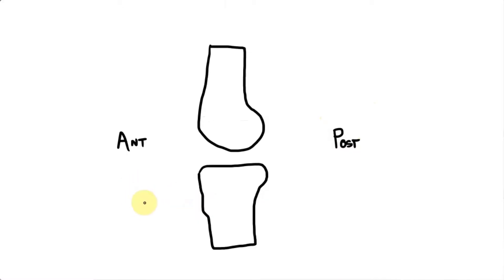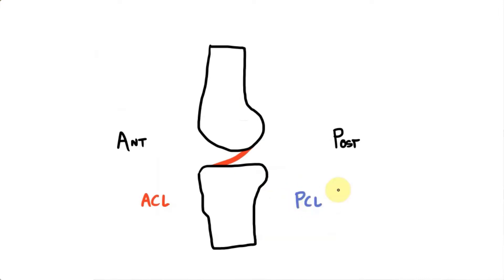The cruciate ligaments pass between these bones and are named after their attachment to the tibia. So the anterior cruciate ligament starts at the anterior aspect of the tibia and passes to the posterior femur. The posterior cruciate travels in the opposite direction, starting on the posterior tibia and heading anteriorly.